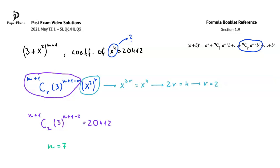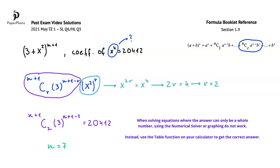Of course, there are other ways to get to this result. Here, I decided to use the method that, to me, seems to be the quickest one. An exam-taking tip that you can use on similar questions is that, as we discussed, when solving equations where the answer can only be a whole number, using the numerical solver or graphing does not work. Instead, use the table function on your calculator to get the correct answer.